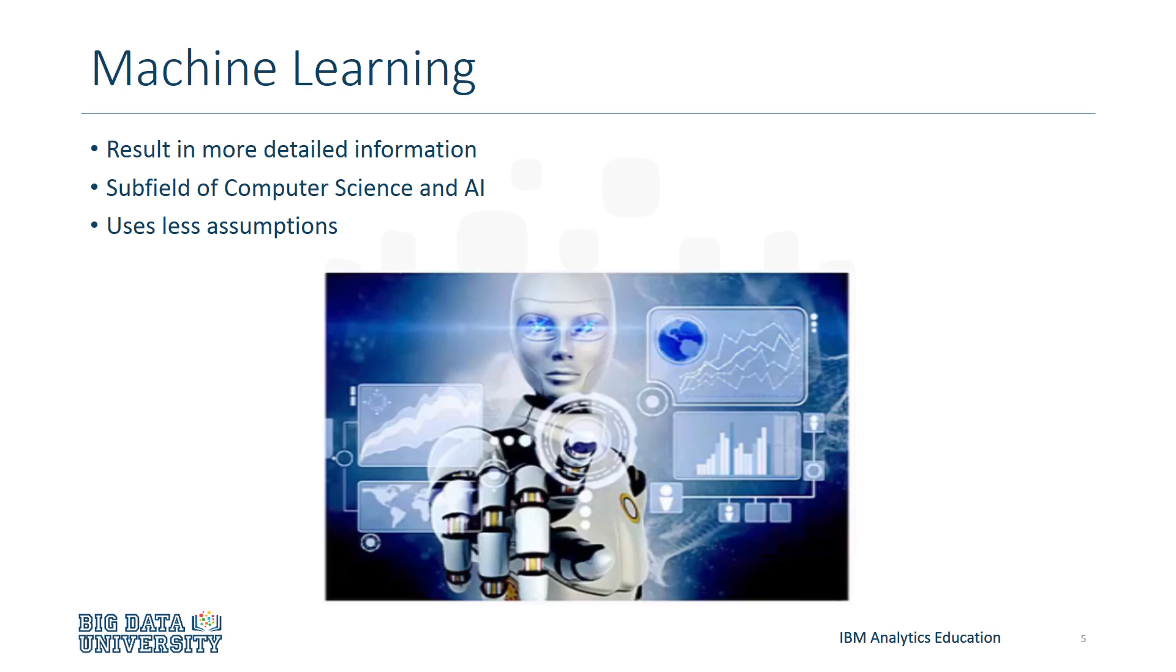Machine learning can result in more detailed information than statistical modeling. Machine learning is a subfield of computer science and artificial intelligence, and contributes to building systems that can learn from data without explicit programming. Finally, machine learning uses fewer assumptions than does statistical modeling.